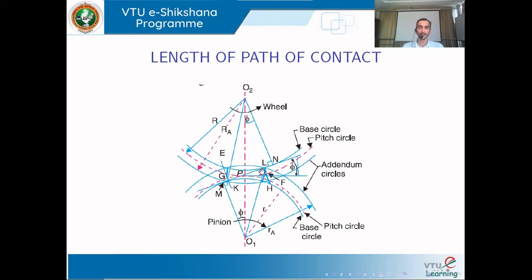This line intersects the addendum circle of both gears, and the in-between distance is called the length of path of contact. In this diagram, we have a pinion and another gear called a wheel. All radii corresponding to the pinion are shown in small letters and for the wheel in capital letters. The addendum circle radius of the pinion is given as small r_A, and for the wheel it is capital R_A. We also have the base circles and pitch circles of both gears, which are in contact at point P — the pitch point.